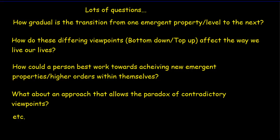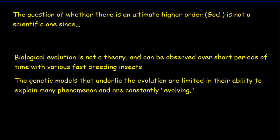Our little map of everything raises all kinds of questions, and I'm sure you can come up with a better list than the one I've come up with here. I'm asking myself questions like: How gradual is the transition from one of these emergent properties or levels to the next? Should we be drawing it with dotted lines, or should we go from light to dark as a very gradual transition, or should we have a solid band? How do these differing viewpoints—bottom-up and top-down—affect how we actually live our lives? Is there an advantage to having both types of people here on earth? How could a person best work towards achieving new emergent properties, or higher orders within themselves? Or maybe what about an approach that allowed the paradox of the contradiction between the two viewpoints? I think this is done somewhat in Buddhism. I'm sure you have many of your own questions, and that's what this map's about—it's about generating ideas and generating questions.